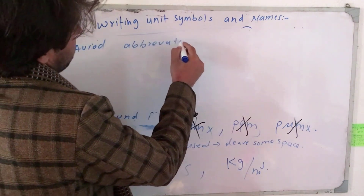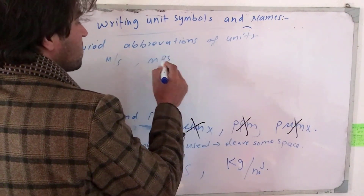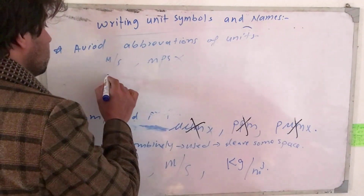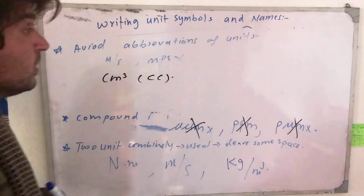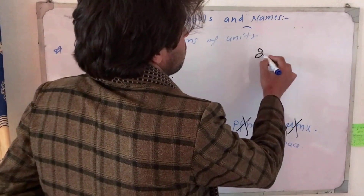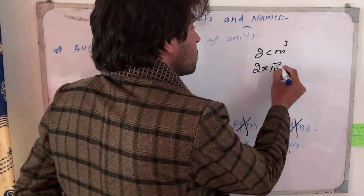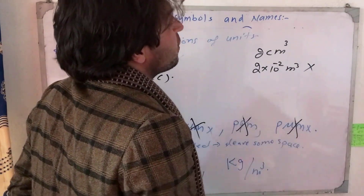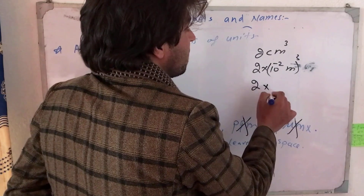Derivations — for example, meter per second, also written as m/s or MPS. Another derivation is cubic centimeter, also abbreviated CCC in derivation form. The last point is about power and exponent. Let's suppose we have 2 centimeter cubed — students combine this with the prefix: centi equals 10 to the power of minus 2 meters, so centimeter cube is 10^-2 meter, all cubed.